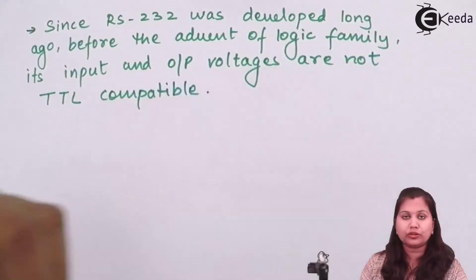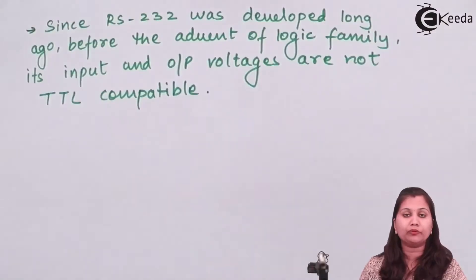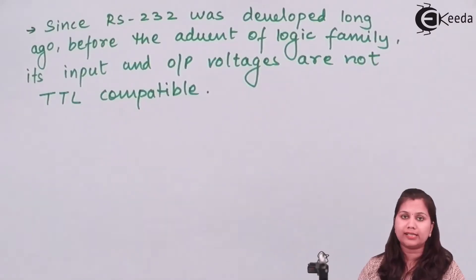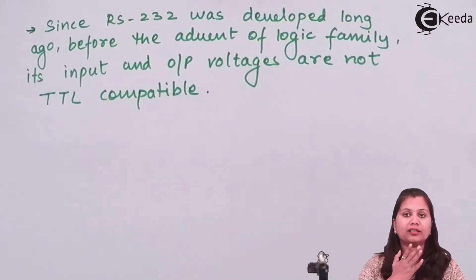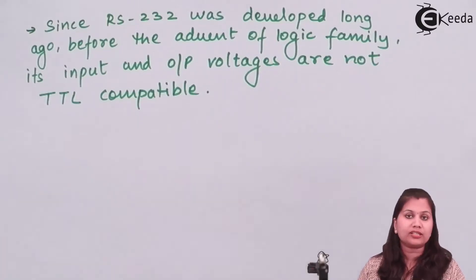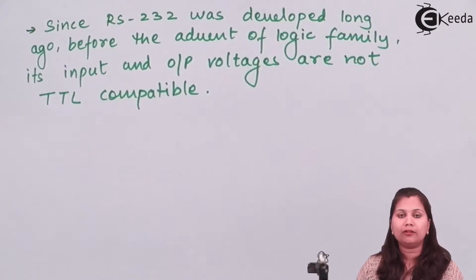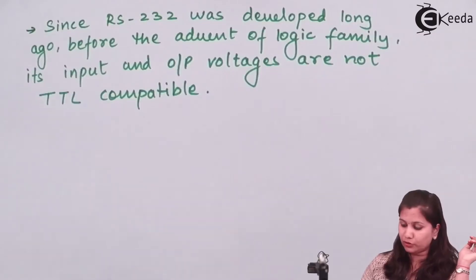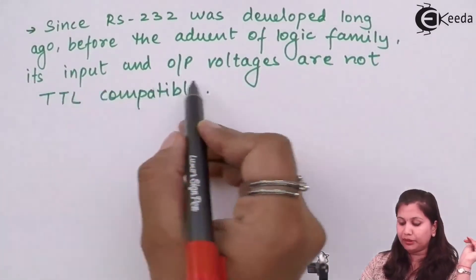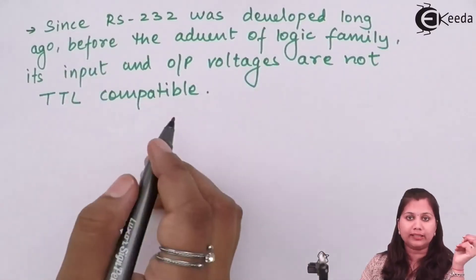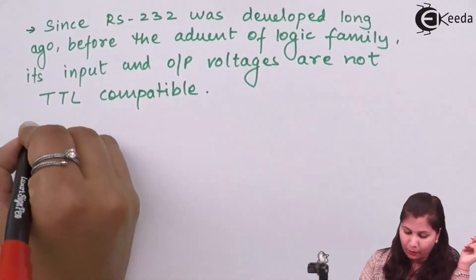The input and output voltages of the RS-232 cable are not TTL compatible because it was developed much earlier than the invention of TTL logic families. Logic families are recently developed, but RS-232 was developed very early, so its input and output voltages are not TTL compatible.